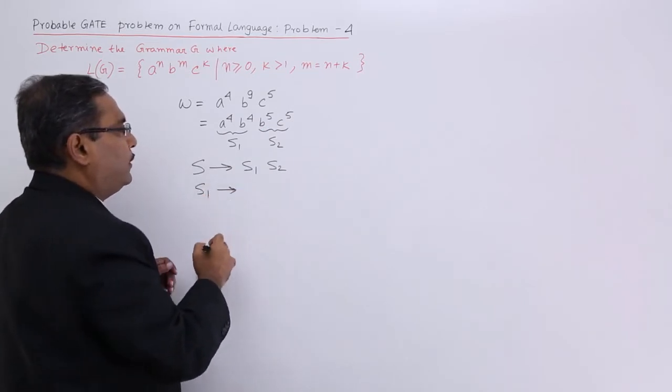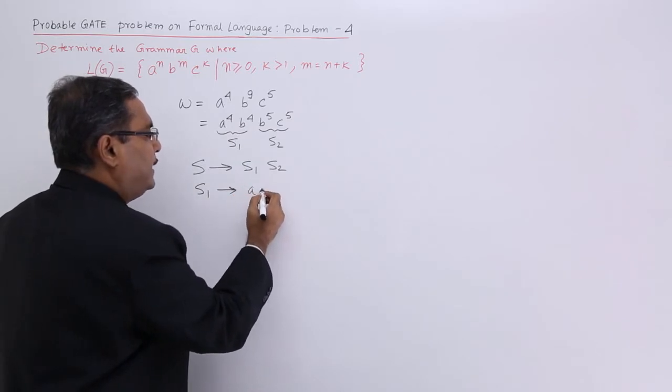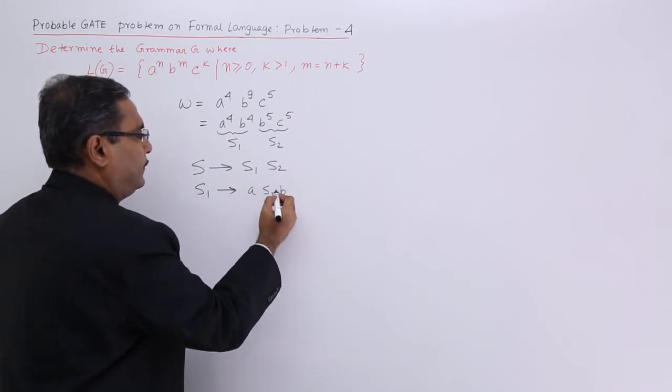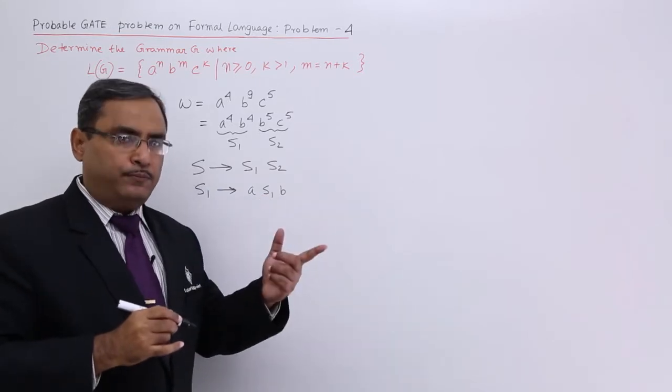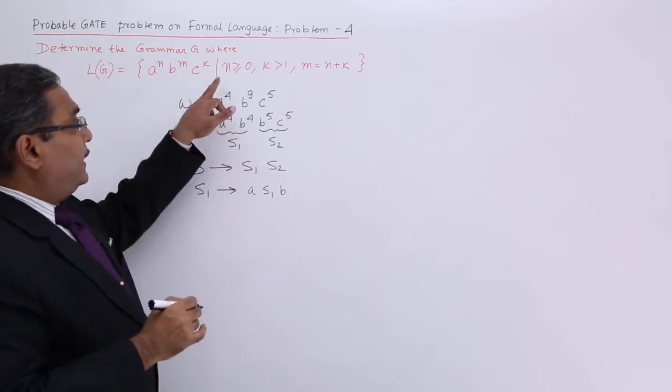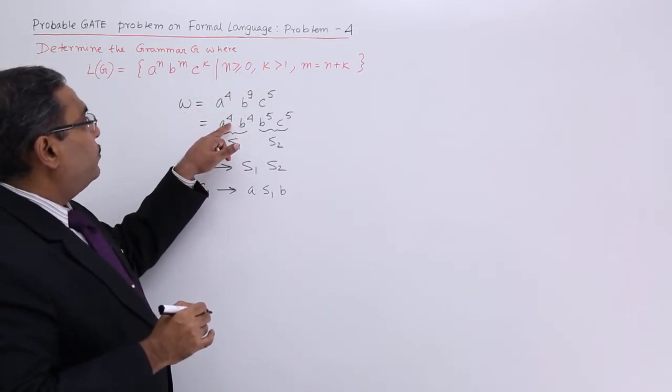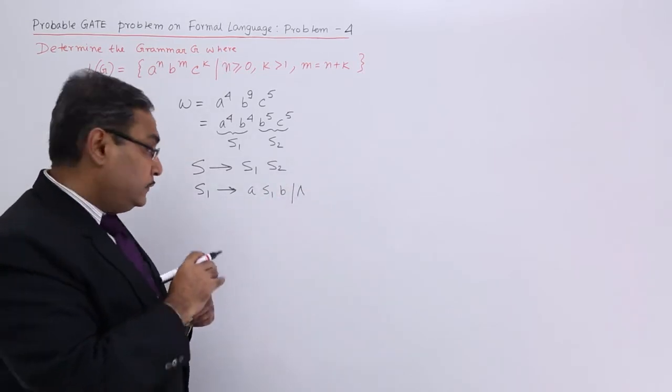Now, I am writing the productions for s1. s1 will produce a and b. Please watch our previous videos. We have solved this one, a^n b^n problem. That is nothing but a^n b^n problem. Now see, here n is greater than or equal to 0. That means a can be 0, so I shall be putting here epsilon.